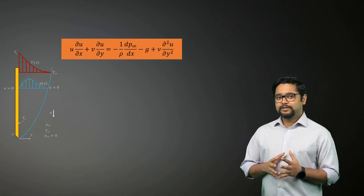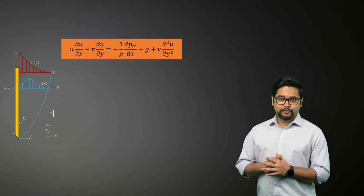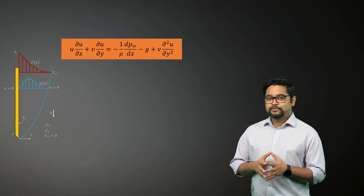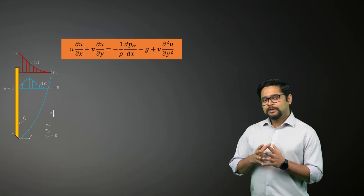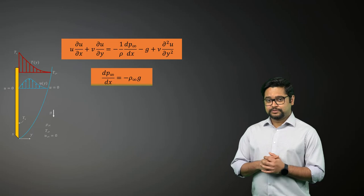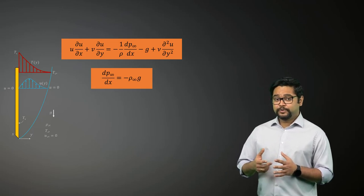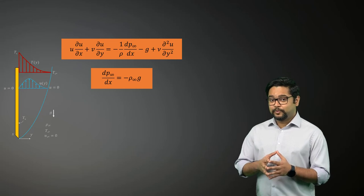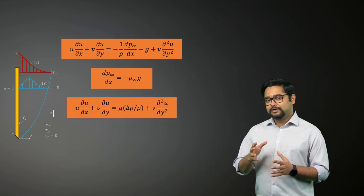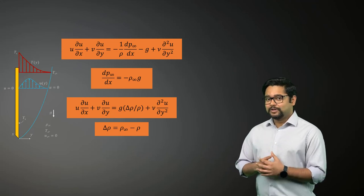dp infinity by dx is the free stream pressure gradient outside the boundary layer, where u is equal to zero. Outside the boundary layer, this equation reduces to this expression. If we substitute this in the x-momentum equation, then we get the following. Here delta rho is the difference between the free stream and the local density.